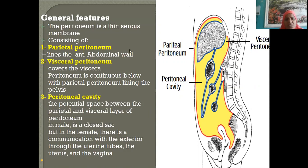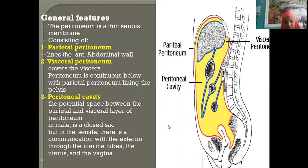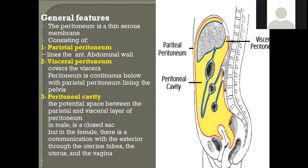Just below the anterior abdominal wall we have parietal peritoneum, below which the visceral organs are closely invested by the visceral peritoneum. The peritoneal cavity is the potential space between the parietal and visceral layers. In males, this peritoneal cavity is a closed sac, whereas in females it is open at the fallopian tubes.